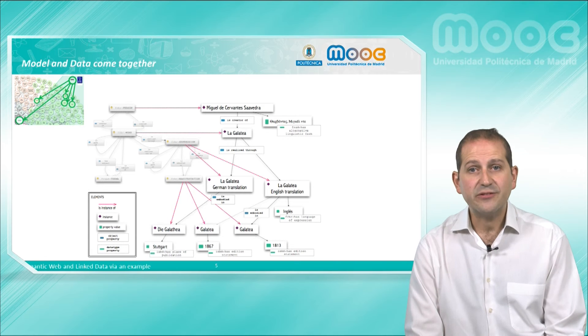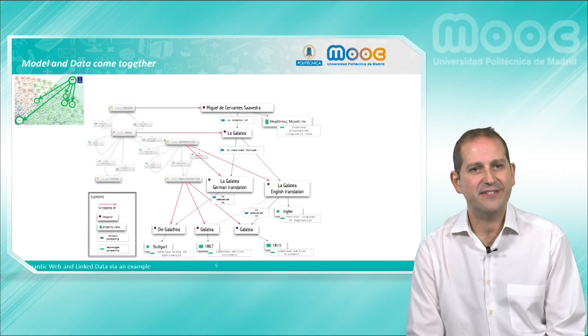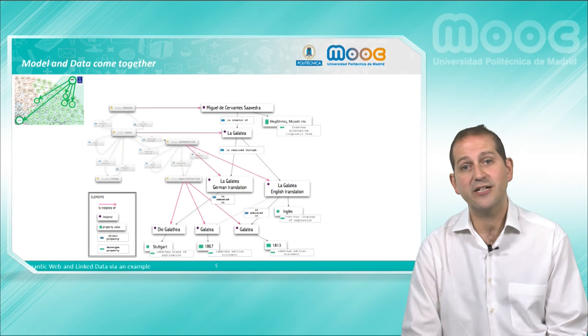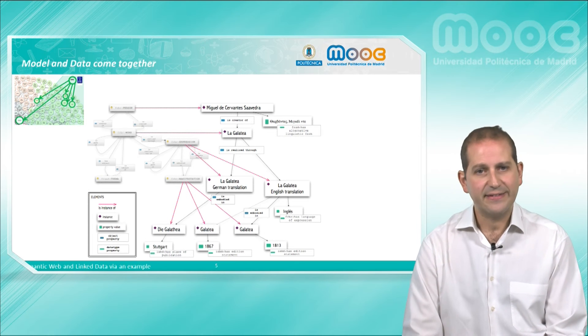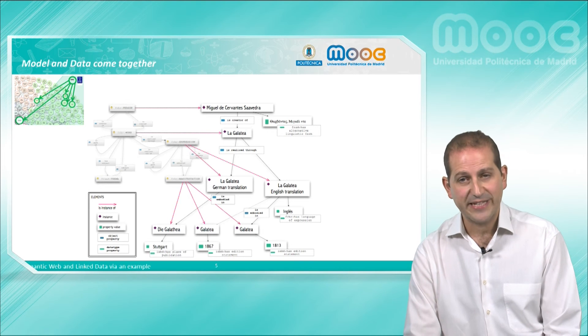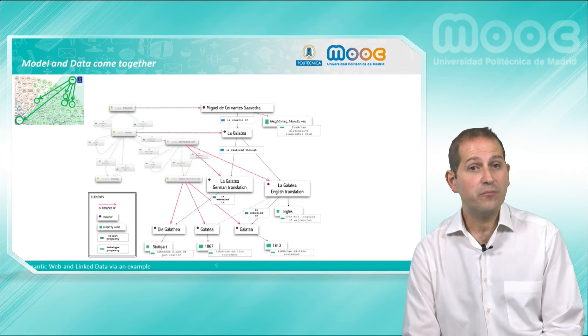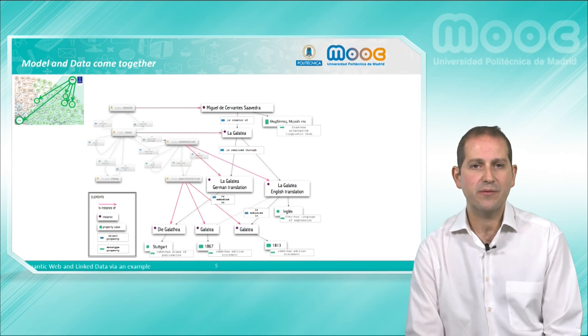Furthermore, many of these resources belong to different data providers: the Spanish National Library, the German Library, the British one, etc. All of these—vocabulary and data—are published according to the same principles, that is, models and data come together on the Web of Linked Data.